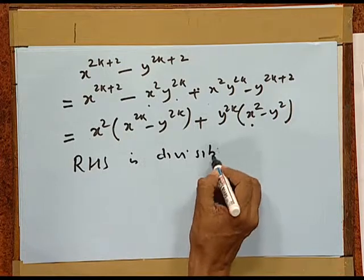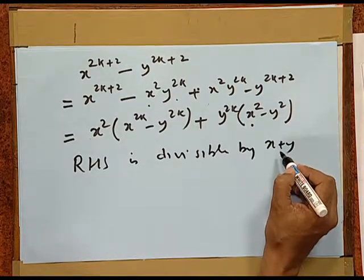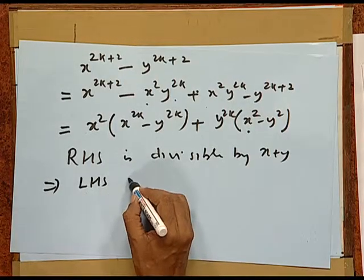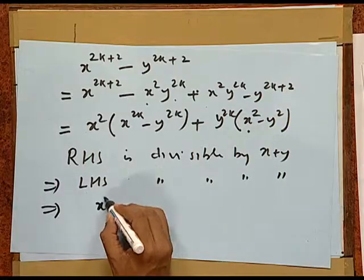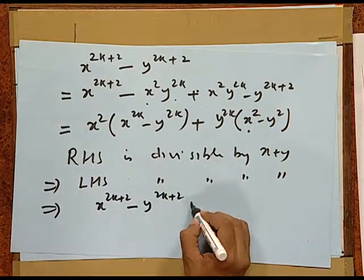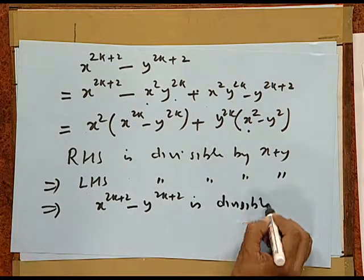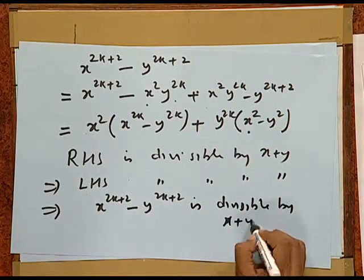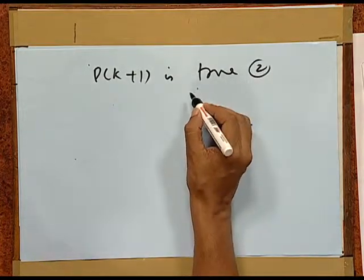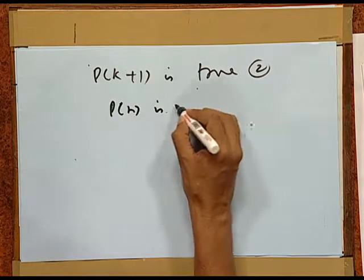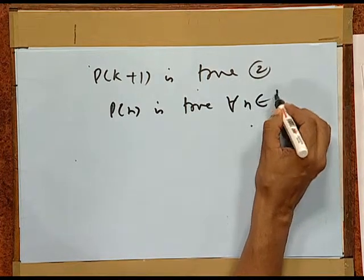In this manner, the entire right-hand side is divisible by x plus y, and hence the left-hand side should be divisible by x plus y — that means x^(2k+2) minus y^(2k+2) is also divisible by x plus y. Thus, we have proved P(k+1) is also true. Thus, both steps are complete, so we can claim that P(n) is true for all n belonging to the natural numbers. It means the given result is true for all natural numbers.